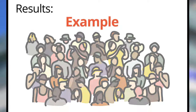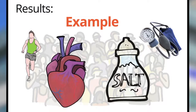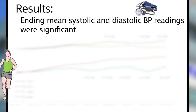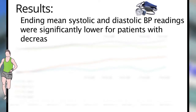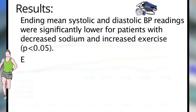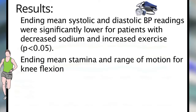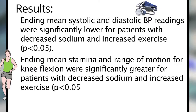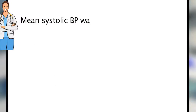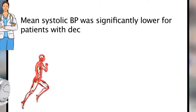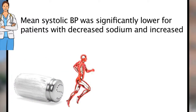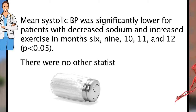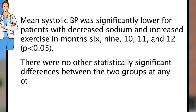In our example, recall that the core results from your tests revealed the following. Ending means systolic and diastolic BP readings were significantly lower for patients with decreased sodium and increased exercise. Ending means stamina and range of motion for knee flexion were significantly greater for patients with decreased sodium and increased exercise. Mean systolic BP was significantly lower for patients with decreased sodium and increased exercise in months 6, 9, 10, 11, and 12. There were no other statistically significant differences between the two groups at any other time points.